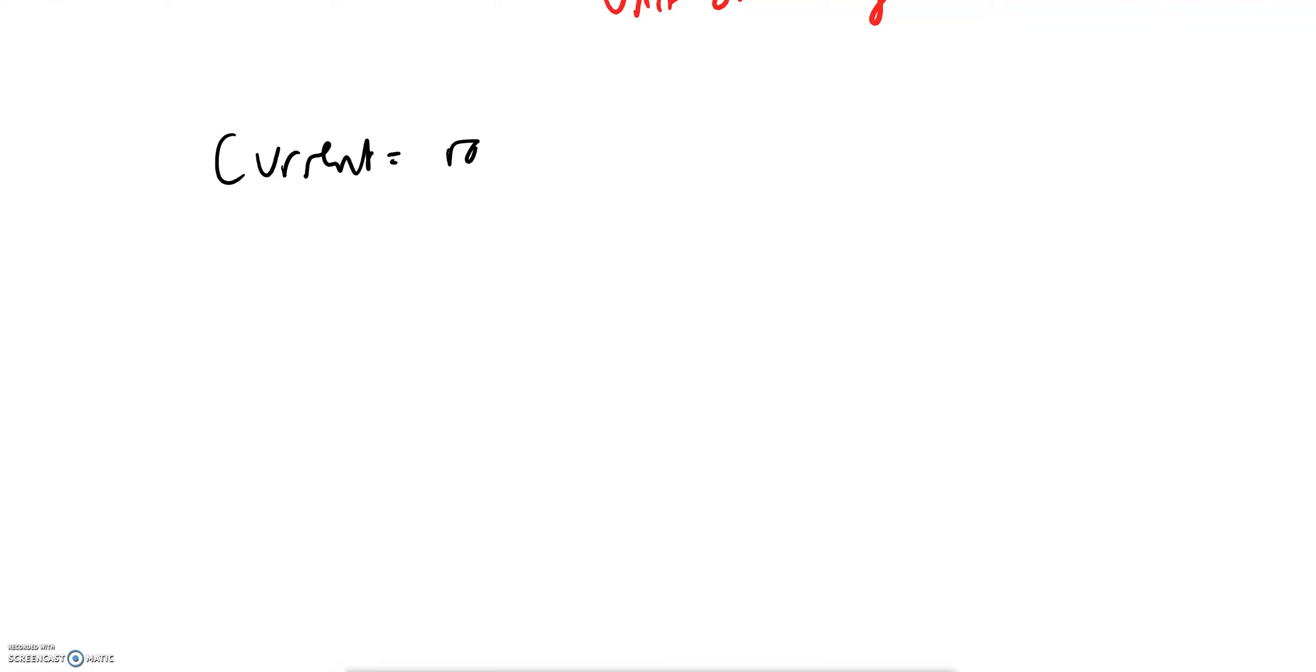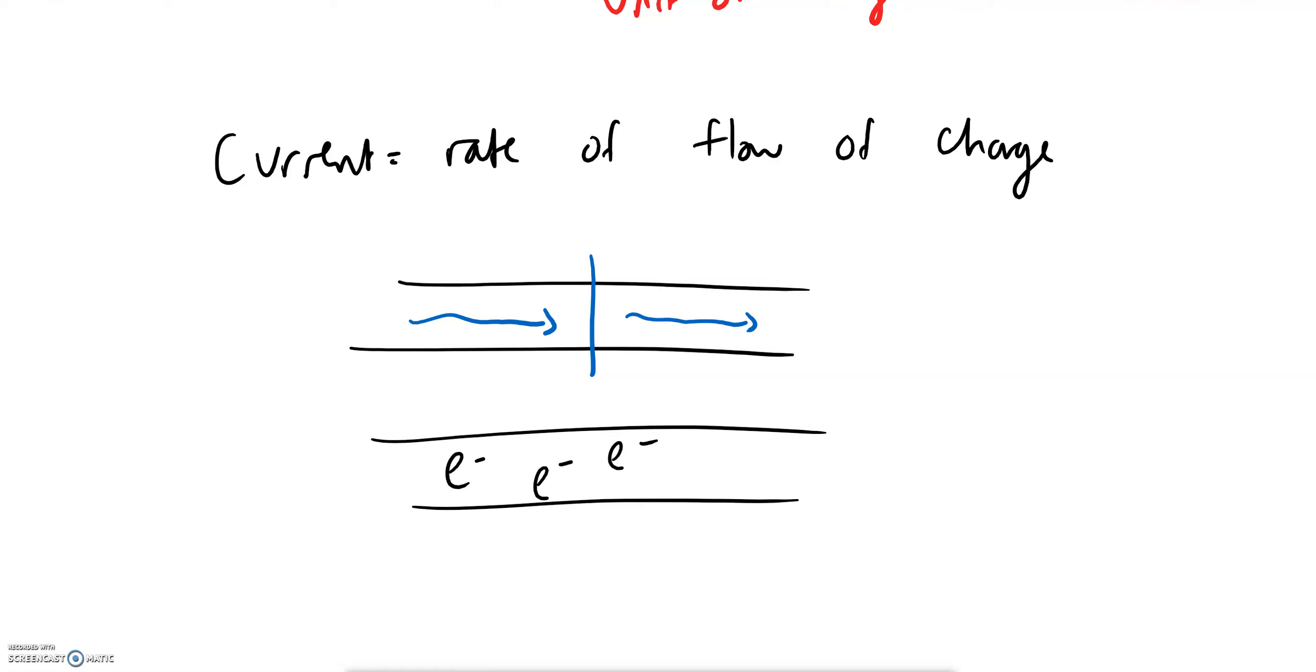Current's a bit easier to understand. Current is the rate of flow of charge. What does that mean? That basically means if you imagine, well you can think of it like water in a pipe, it's the amount of water passing a point every second. In a circuit, well it's not water, it's electrons flowing. So it's kind of the amount of electrons that pass a point every second. The rate means per second.